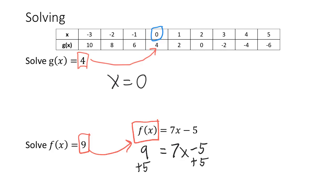And that tells us that 14 equals 7x. Then we can get the x by itself by dividing both sides by 7. 14 divided by 7 is 2. And that tells us our solution: x equals 2. This is the input that will produce 9 as an output in the function f.